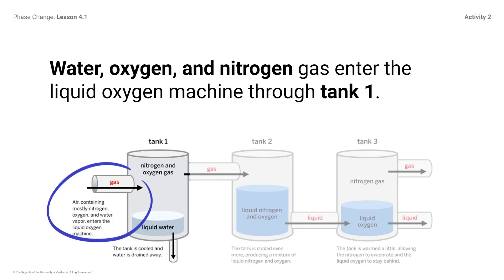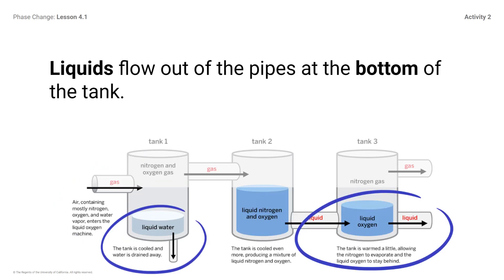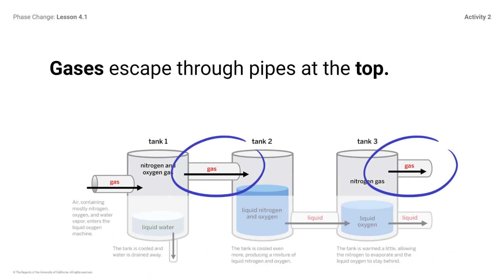Water, oxygen, and nitrogen gas are all present in the air and enter the liquid oxygen machine through tank number one. Air containing mostly nitrogen, oxygen, and water vapor enters the machine. Liquid flows out of the pipes at the bottom of the tank. The tank is cooled and water is drained away. The tank is then warmed a little, allowing the nitrogen to evaporate and the liquid oxygen to stay behind. Gases escape through the pipes at the top.